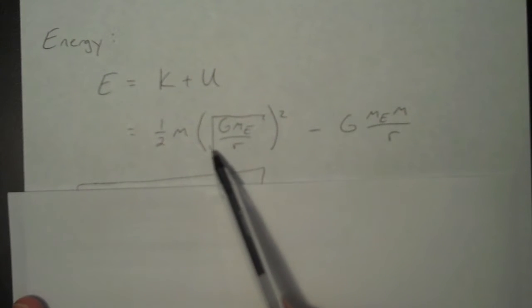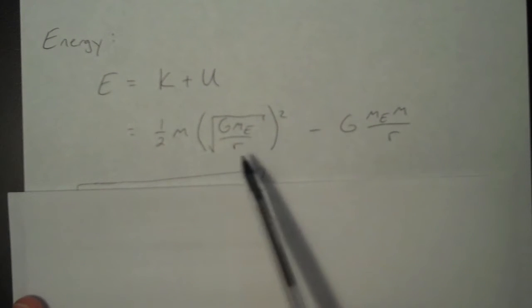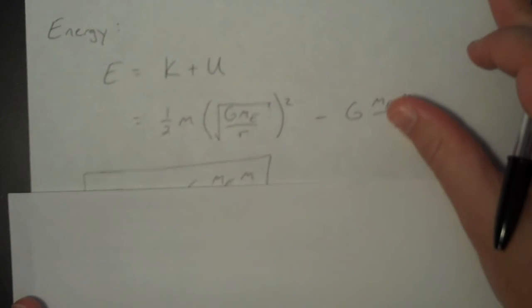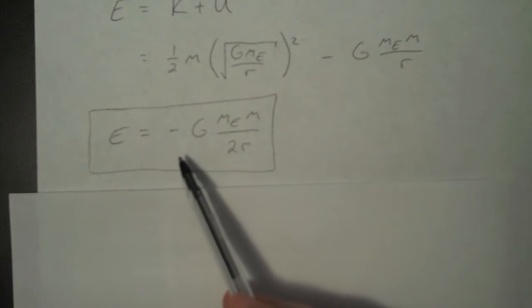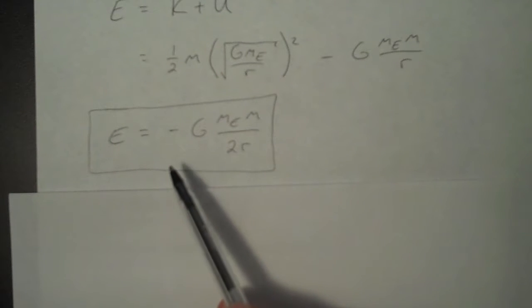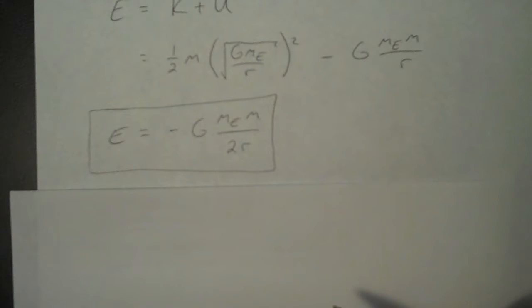Notice that I'm squaring away the square root. And so I can easily combine these into one term. The total energy in a circular orbit is actually negative. What does this actually mean? What this means is that you need to put in a positive amount of that energy in order to escape Earth's gravitational pull.